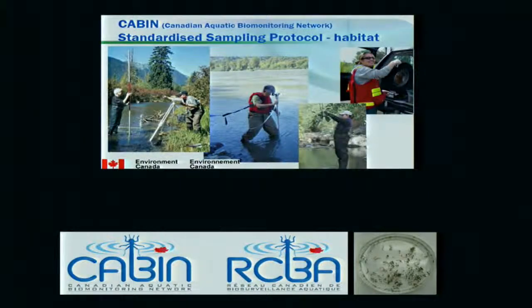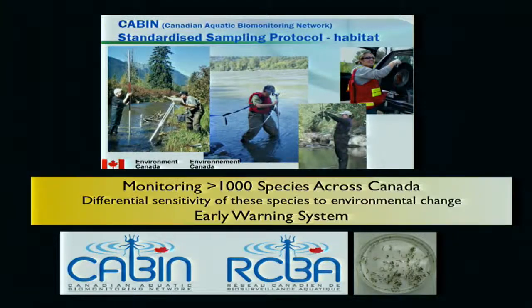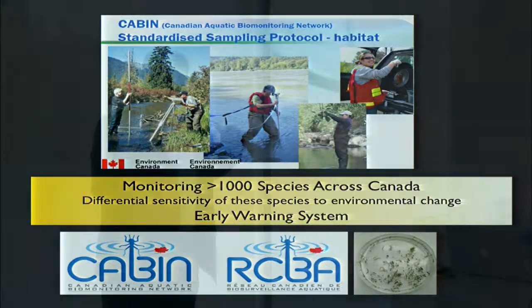Agencies like Environment Canada and the US EPA — and similar agencies here in Europe — look at the consequences of environmental change on habitats. The Canadian Aquatic Biomonitoring Network essentially tracks about a thousand species of benthic organisms to understand changes in the environment. They're like an early warning system — very sensitive to environmental change and complementary to the chemical probes they have.